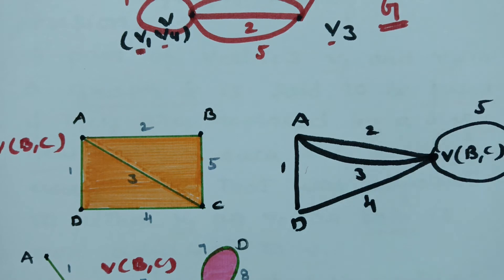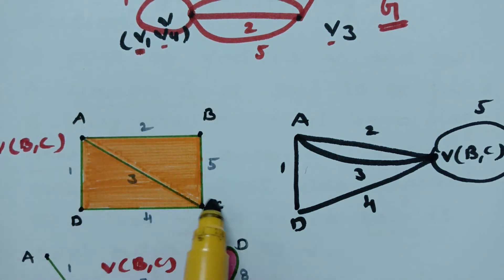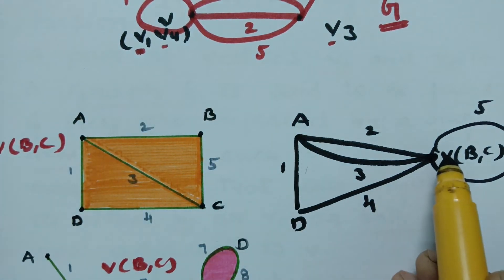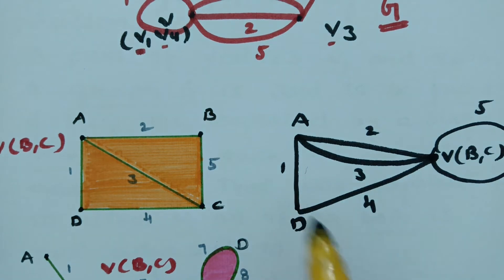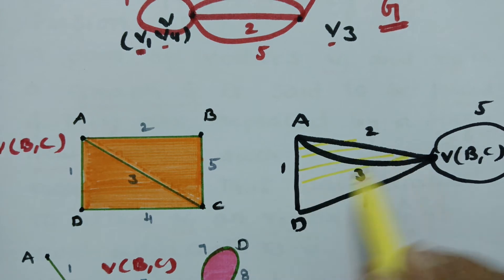The vertices should be reduced by 1. In the original graph there are 4 vertices; here there are only 3. So it is reduced by 1, and the edges remain the same after fusion. This is how we draw the figure after fusion.